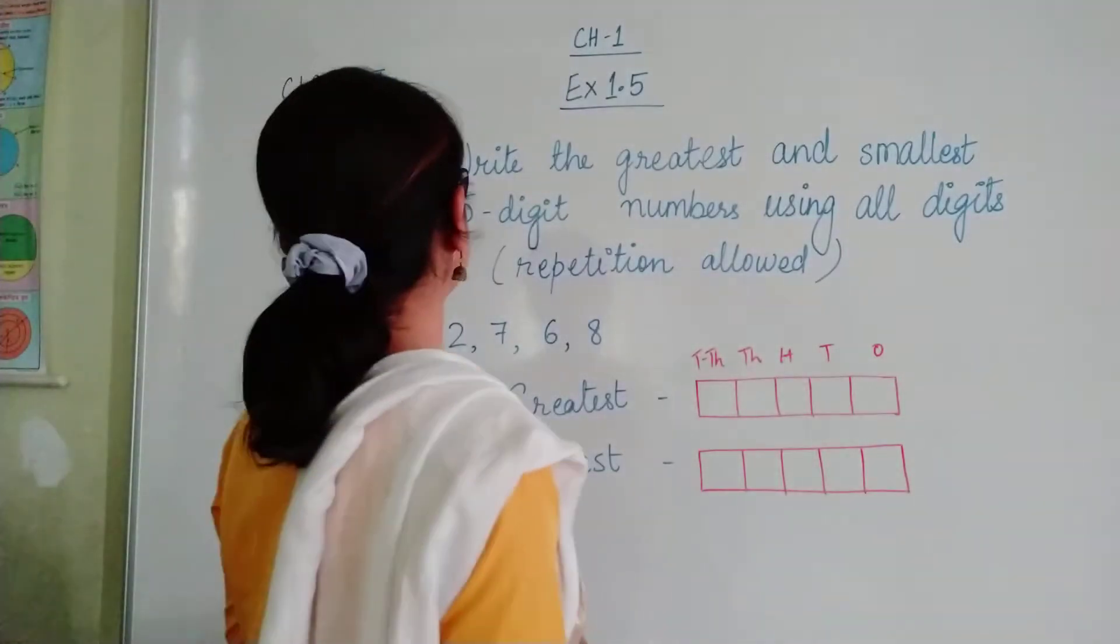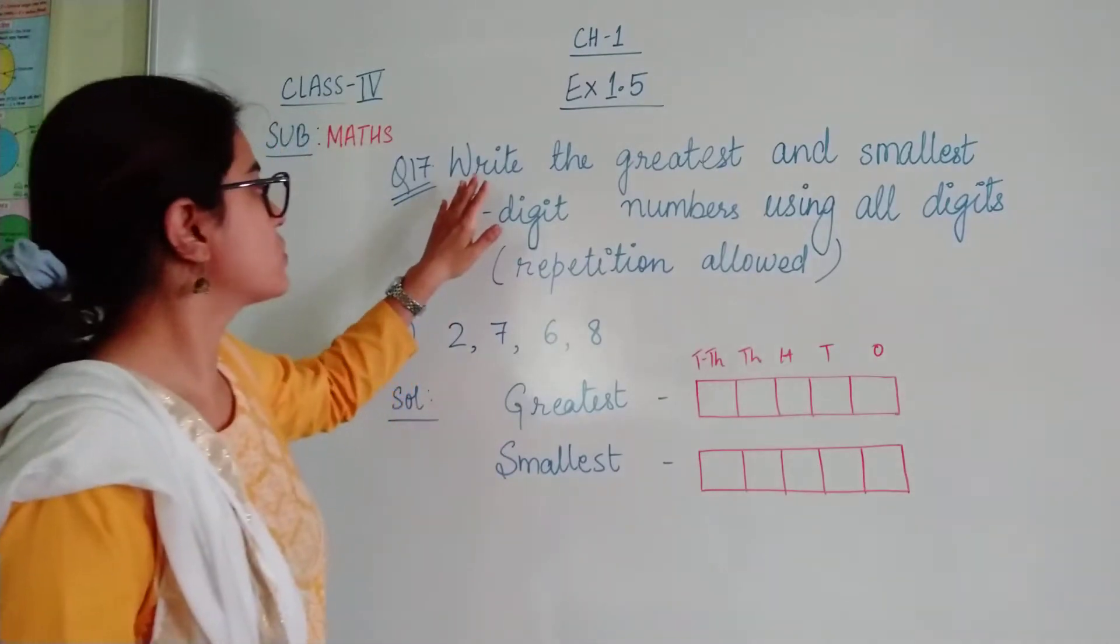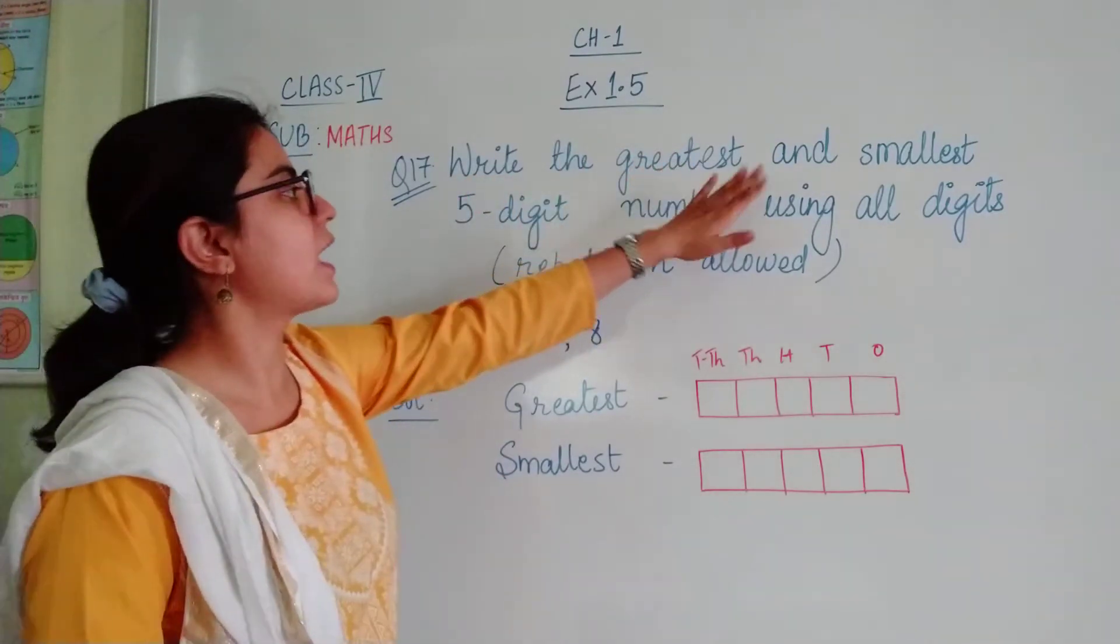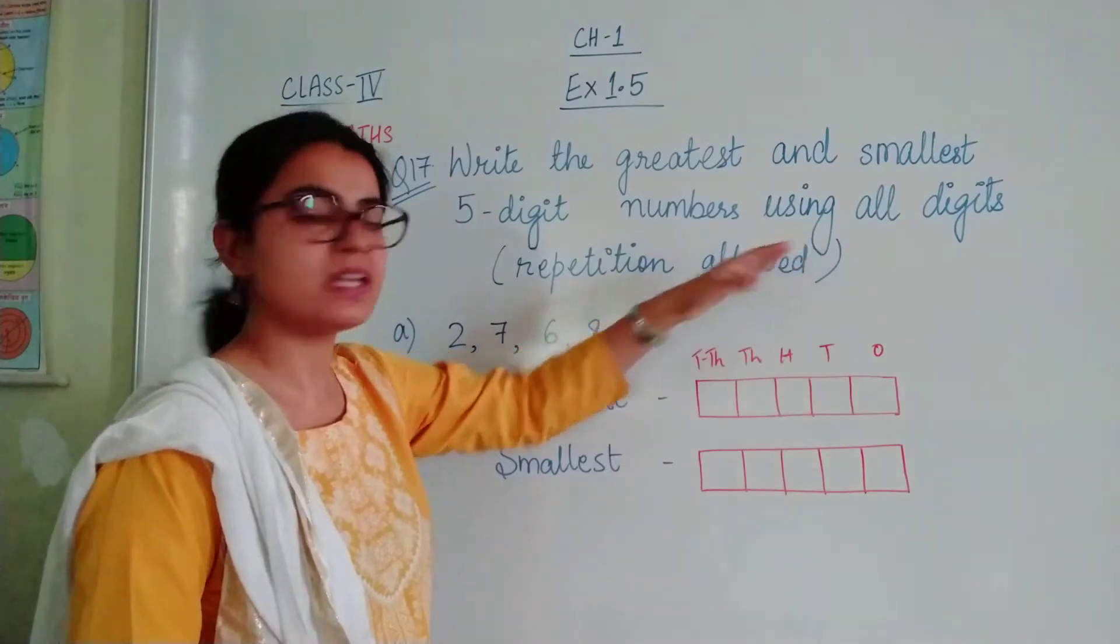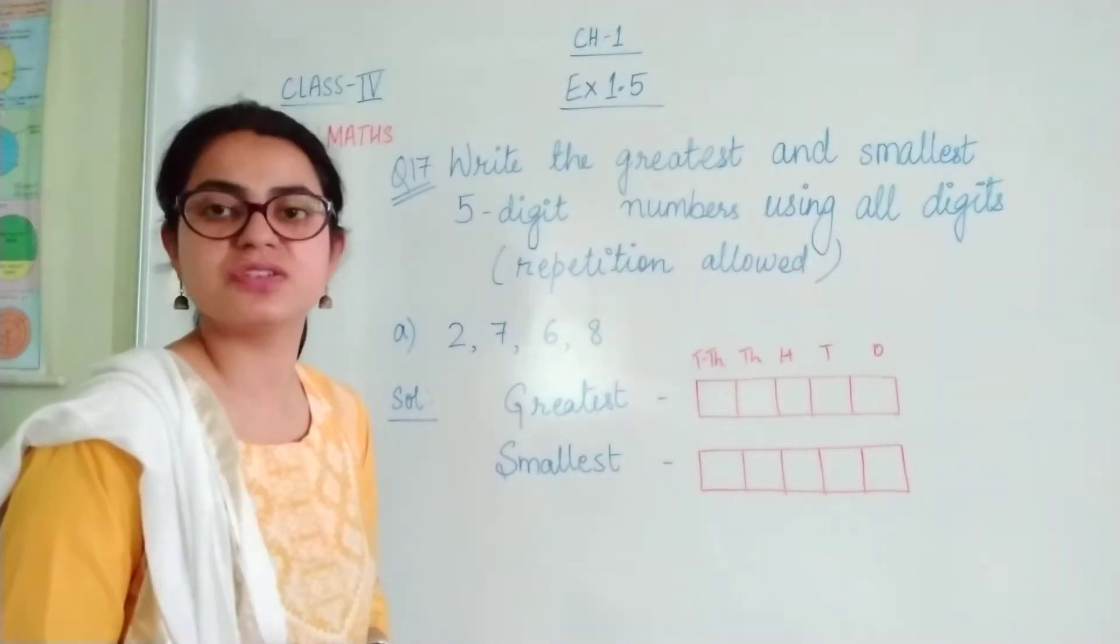Students, in this video we are going to solve question number 17. This question states, write the greatest and the smallest 5-digit number using all digits. Repetition is allowed, that means you can repeat a digit if you want.